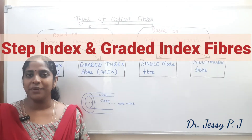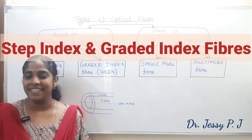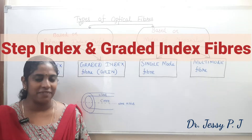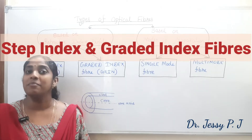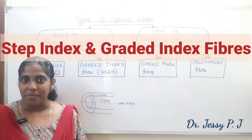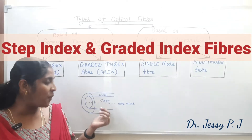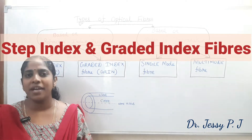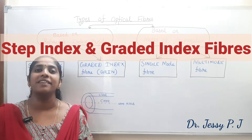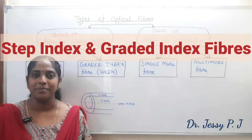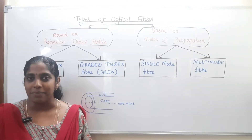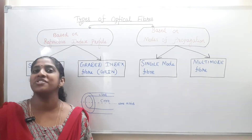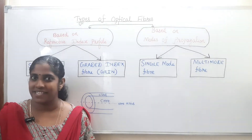In one of the previous videos we have already seen the principle of optical fiber as total internal reflection. The main parts of optical fibers are core and cladding, and we have also seen various parameters related with optical fibers: numerical aperture, acceptance angle, V number, fractional refractive index change, etc.